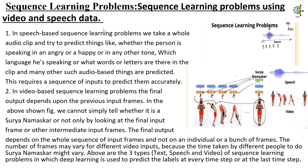Sequence learning problems using video and speech data. In speech-based sequence learning problems, we take a whole audio clip and try to predict things like whether the person is speaking in an angry, happy, or any other tone, which language they are speaking, or what words or letters are in the clip. This requires a sequence of inputs to predict them accurately. In video-based sequence learning problems, the final output depends upon the previous input frames. We cannot simply tell whether it is a Surya Namaskar or not only by looking at the final input frame or other intermediate input frames. The final output depends on the whole sequence of input frames and not on individual or a bunch of frames.